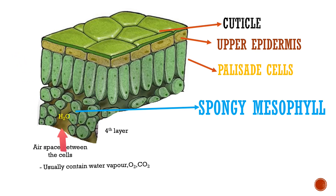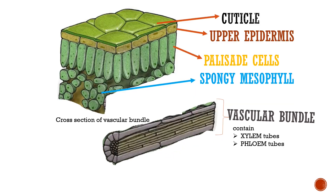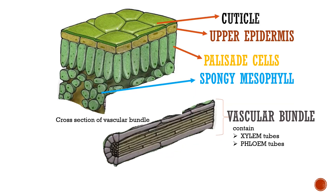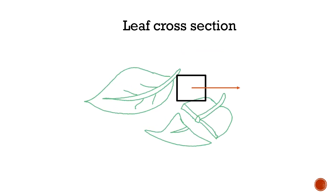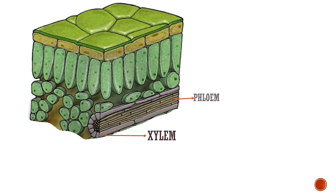There is air space between the spongy mesophyll. The air space contains water vapor, oxygen gas, and carbon dioxide. That empty section is the vascular bundle. It contains xylem tube and phloem tube — we call it a stem leaf but actually it is a vascular bundle. The xylem tube is larger than the phloem tube.